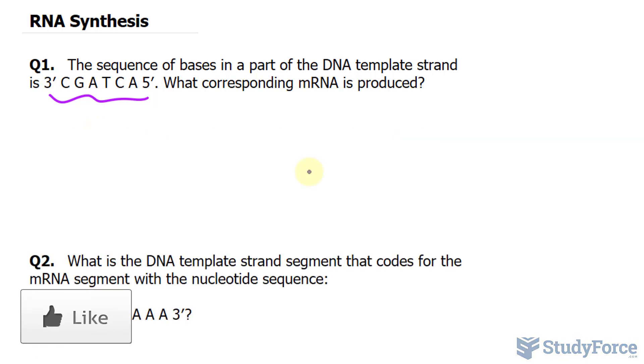So when RNA polymerase is making the mRNA, it starts right here. And as it's forming the mRNA, it adds in the 5' to 3' direction.